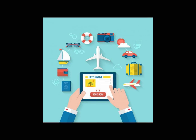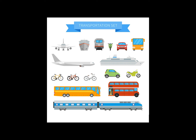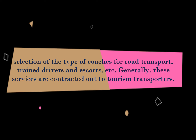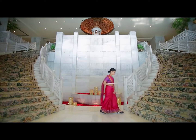Planning for MICE requires a lot of coordination — perhaps more than the tourism industry generally. One of the main concerns identified by the industry is transport. This involves not only ground transport but also air transport. Aspects that need attention at the planning stage include selection of the type of coaches for road transport, train drivers, and escorts. Generally, these services are contracted out to tourism transporters.